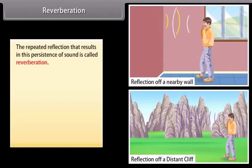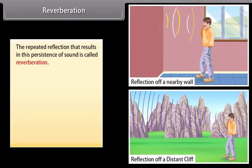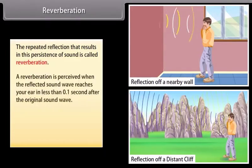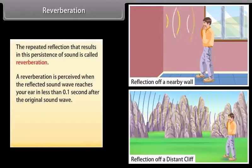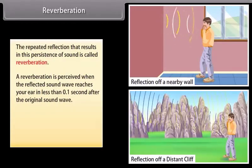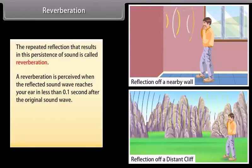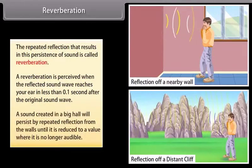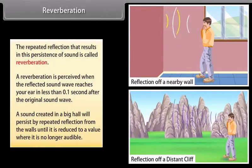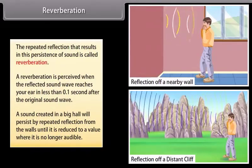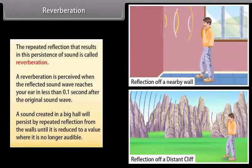Reverberation. The repeated reflection that results in this persistence of sound is called reverberation. A reverberation is perceived when the reflected sound wave reaches your ear in less than 0.1 second after the original sound wave. For example, a sound created in a big hall will persist by repeated reflection from the walls until it is reduced to a value where it is no longer audible.